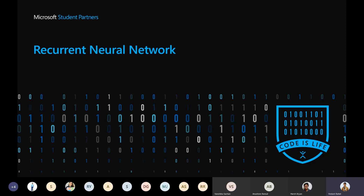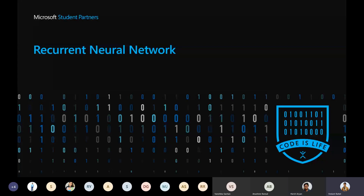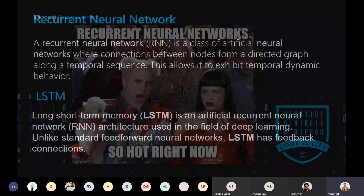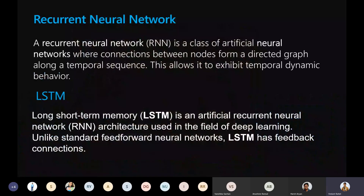Next is Recurrent Neural Network, which is very much in demand right now. Lots of researchers and developers are working on this concept because it has given solutions to many problems. An RNN is a class of artificial neural networks where connections between nodes form a directed graph along a temporal sequence. LSTM — Long Short-Term Memory — is one very popular RNN architecture.